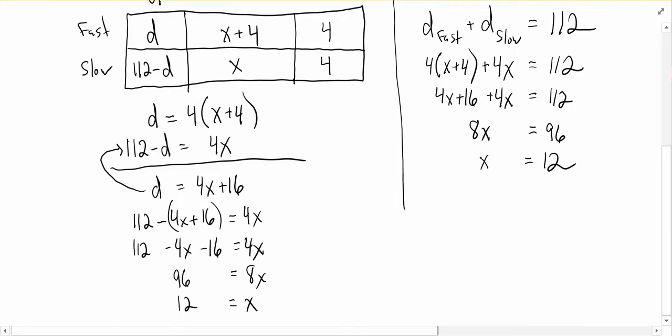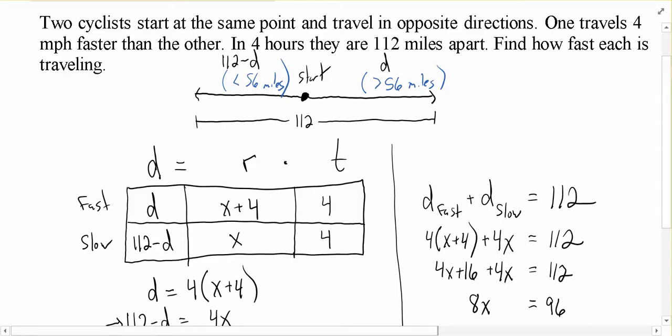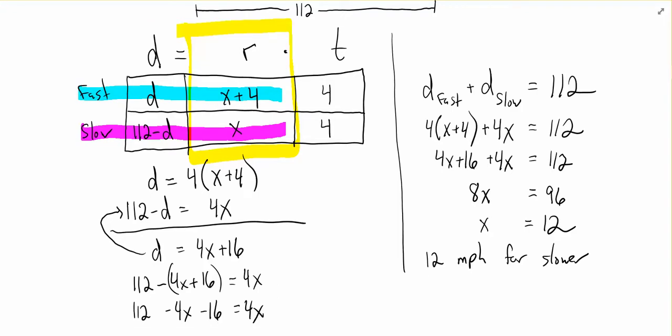Now please note that we haven't answered the actual question yet. We've only solved the algebraic part. Let's come back and read what we were actually asked. We were asked to find how fast each is traveling. So that's our rate. X, note, is the speed of the slow person. So when we got X equals 12, 12 miles per hour for the slower cyclist, whereas the faster cyclist, their rate was X plus 4. So that's 16 if we add 4 to our X value. So for the faster person, they were going 16 miles per hour.